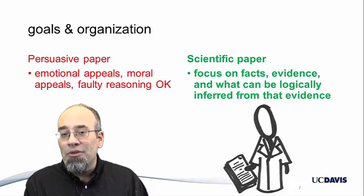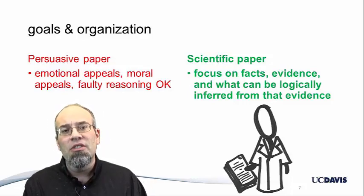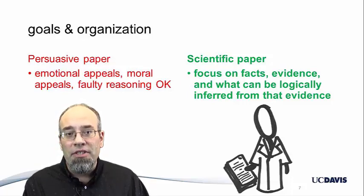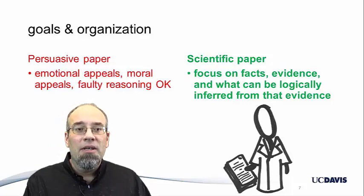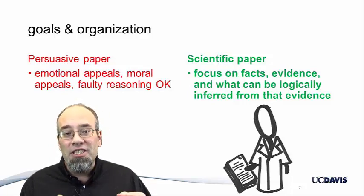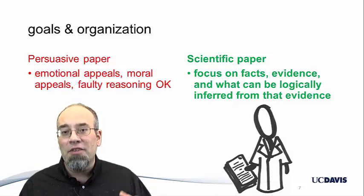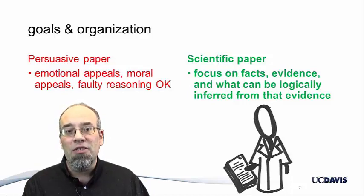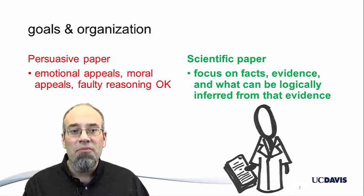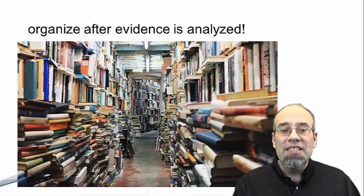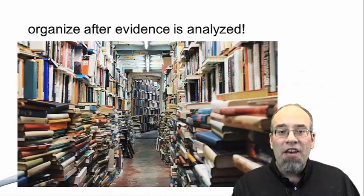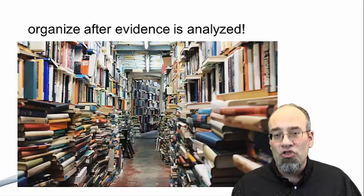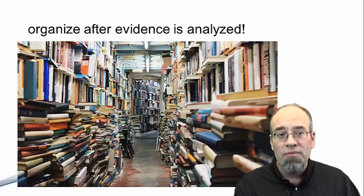So how is a scientific paper structured? Logically. This isn't going to be the same for every paper because every body of evidence is going to be unique. Instead, after evidence is gathered and thoughtfully analyzed, a structure should emerge. Let's look at an example or two.